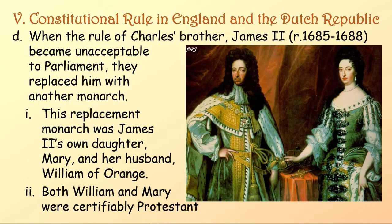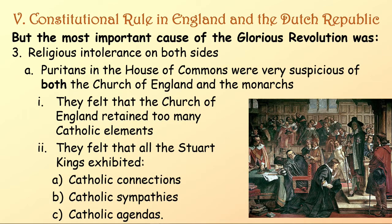When the rule of Charles' brother James II, who ruled from 1685 to 1688, became unacceptable to Parliament — so blatantly Catholic — they replaced him with another monarch. This replacement was James II's own daughter Mary and her husband William of Orange. Both William and Mary were certifiably Protestant, which made them acceptable.